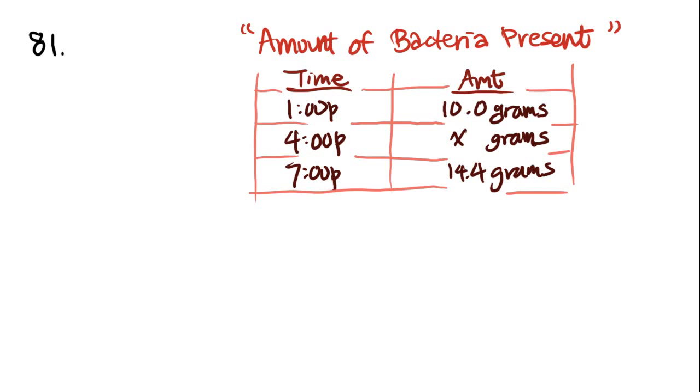Number 81 says, data for a certain biology experiment are given in the table above. If the amount of bacteria present increased by the same factor during each of the two three-hour periods shown, how many grams of bacteria were present at 4 PM? So the question is very curious about X. Specifically, what is X?